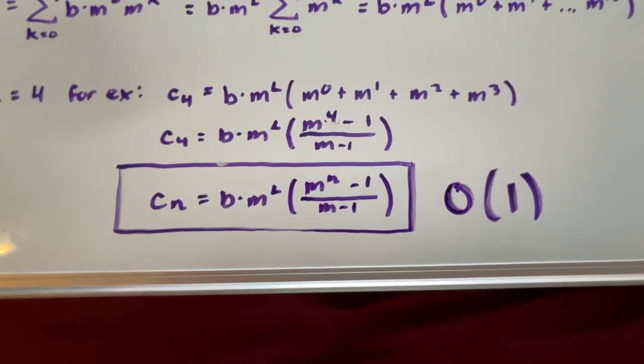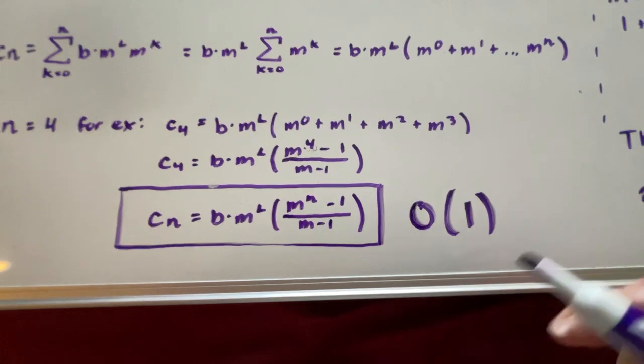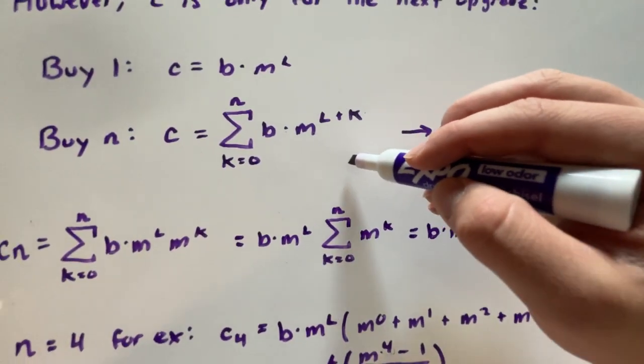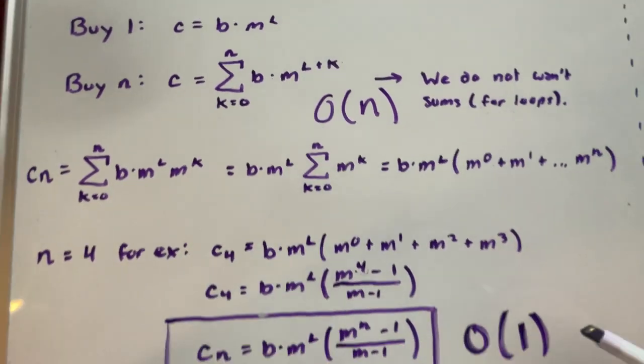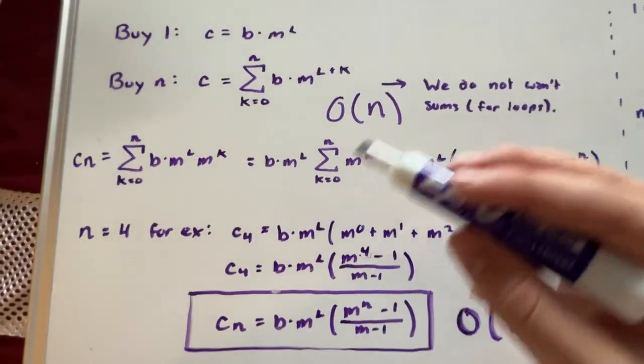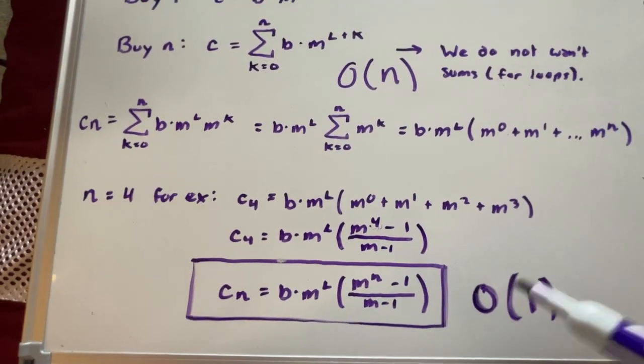This is considered an O(1) algorithm, so it only runs one time. If we were to use this sum we would get O(n), which is less efficient than O(1). That is our goal. We want to simplify our equations as much as possible, get rid of any form of for loops, and we did exactly just that.